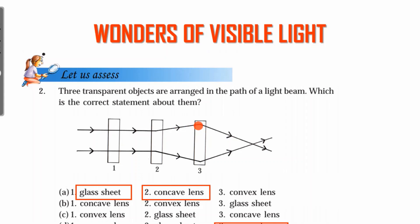What is a concave lens? It diverges light. What is a convex lens? It converges light. Identify the elements: glass sheet, concave lens, convex lens.